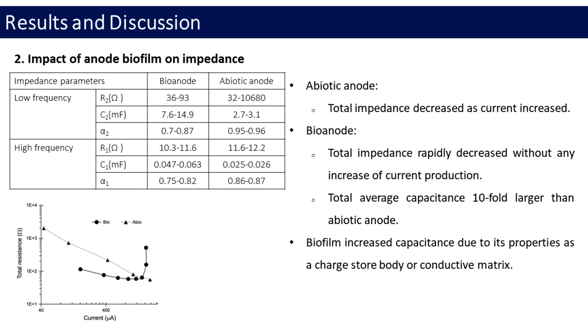In addition, impedance parameters changed during current development in the bioanode. In the abiotic anode, impedance decreased as current increased. However, it rapidly increased without any increase of current production in the bioanode.